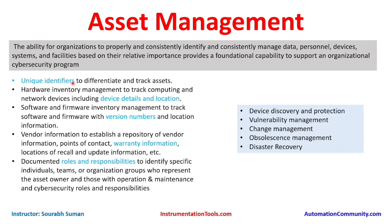First, we need unique identifiers — like the tag names you see in a plant. Several tag naming conventions exist, such as KKS coding, used to identify devices like pressure transmitters, thermocouples, workstations, and network switches. These identifiers are needed for asset tracking as well as hardware inventory management, which tracks computing and network devices including their details and location.